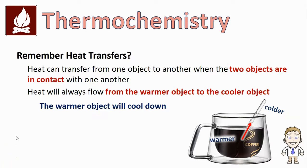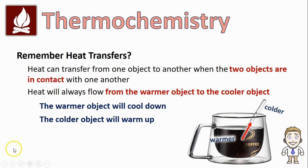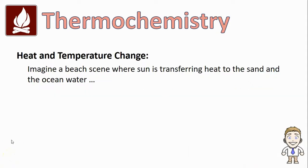In any of these examples, the warmer object will cool down while the cooler object will warm up until both objects are the same temperature. In this video we're going to take a closer look at the types of temperature changes that heat can cause when it's transferred into a substance.